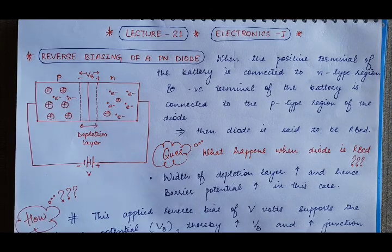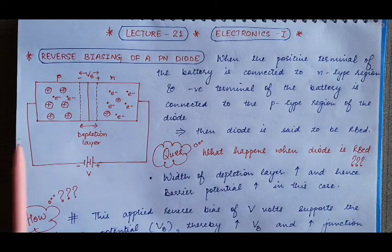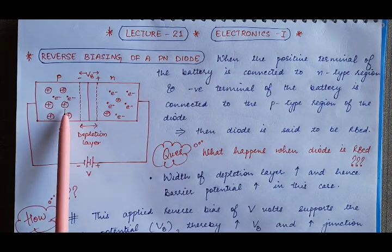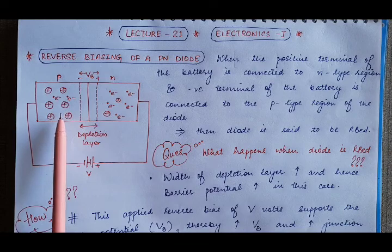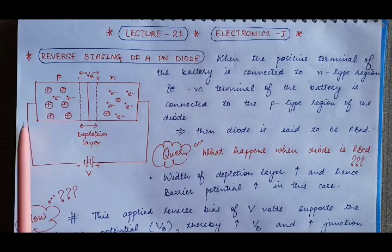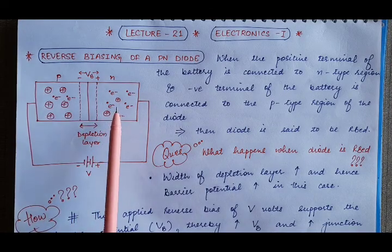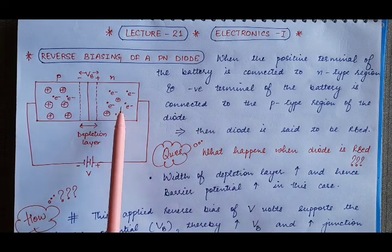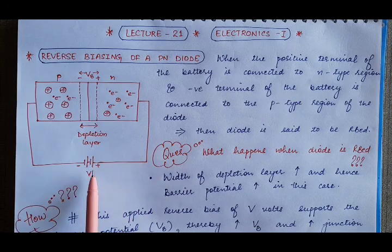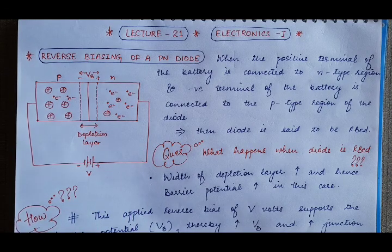So what is reverse biasing and how is it different from forward biasing? In reverse biasing, the P-type region of the diode is connected to the negative terminal of the battery, and the N-type region is connected to the positive terminal of the battery. In this case, the diode is said to be reverse biased.